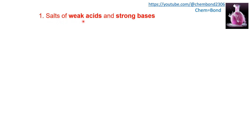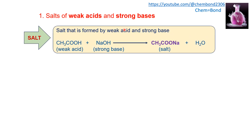The first type is salt of weak acid and strong base. For example, weak acid acetic acid combines with strong base sodium hydroxide to produce sodium acetate salt and water. In the second step, sodium acetate dissolved in water ionizes in aqueous solution into acetate ion and sodium ion.